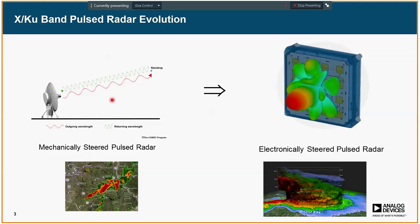As you probably know, radar systems are going through an evolution where they're changing from mechanically steered systems, shown in the picture here, to electronically steered systems. The basics of an electronically steered phased array system is that instead of having one antenna, you have an array of multiple antennas, generally spaced at a lattice spacing of lambda over two for the operating frequency. You transmit the same signal into each element; however, you adjust the amplitude and phase of that signal relative to the other elements, and in doing that you can electronically steer the beam in a particular direction.